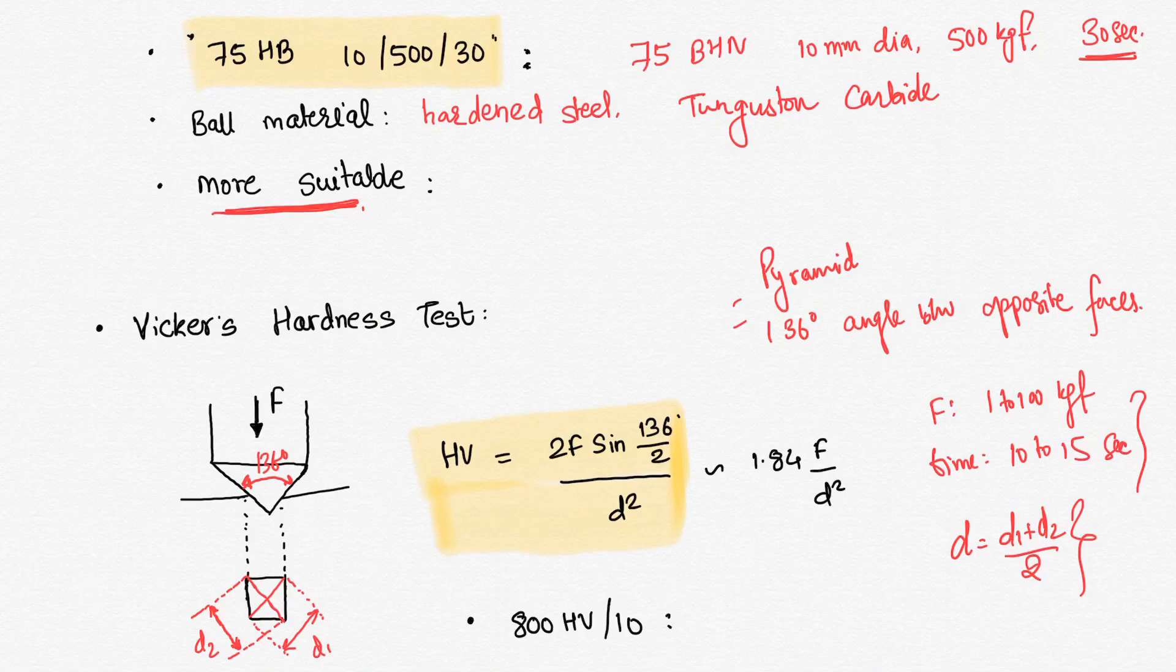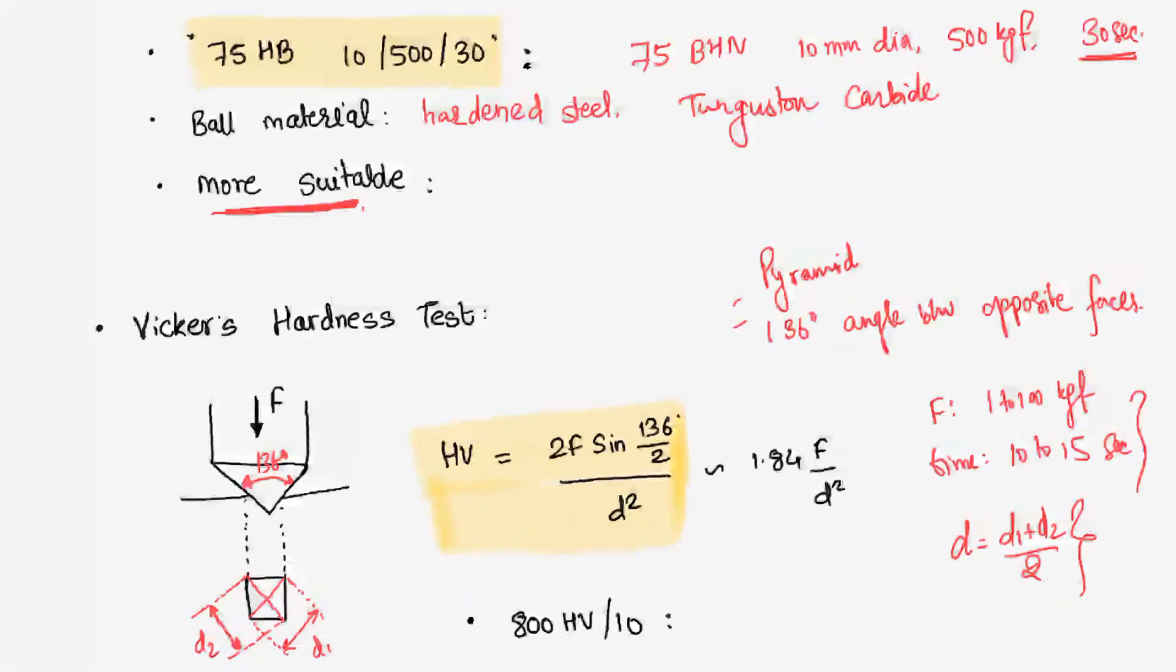This will give even more accurate values. In previous cases, like in Rockwell case we needed to define the scale A, B, C. In Brinell case also we could have used different values of load, different time. But Vickers hardness test is a test which is standard. How to do indentation is standard, how to load is standard, and the time period - that is why it will give us more standard values. There will be more uniformity in the Vickers hardness test.